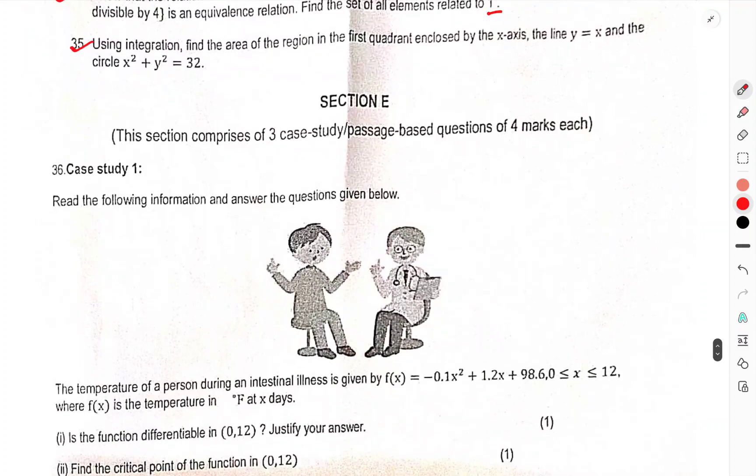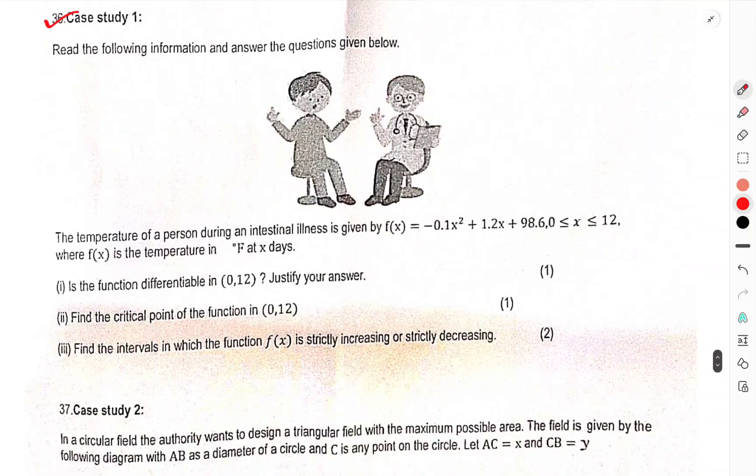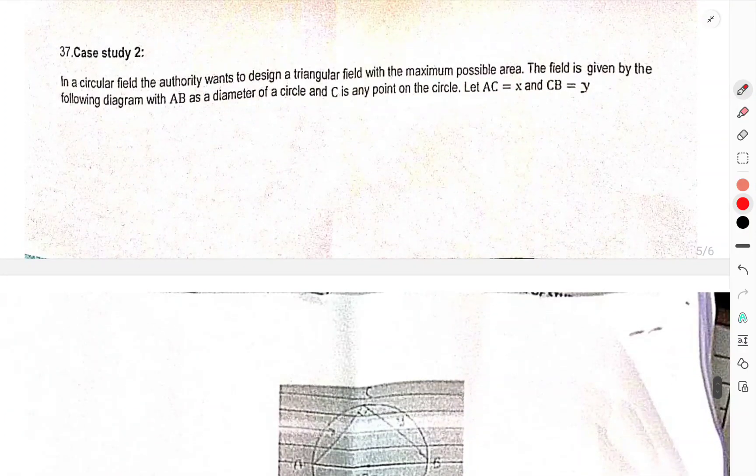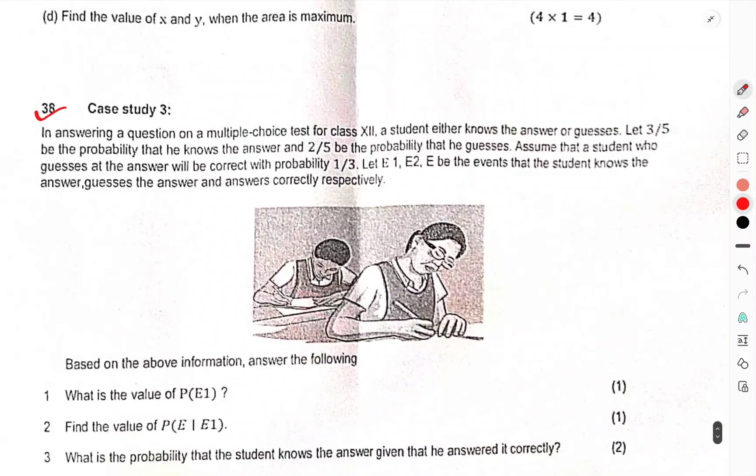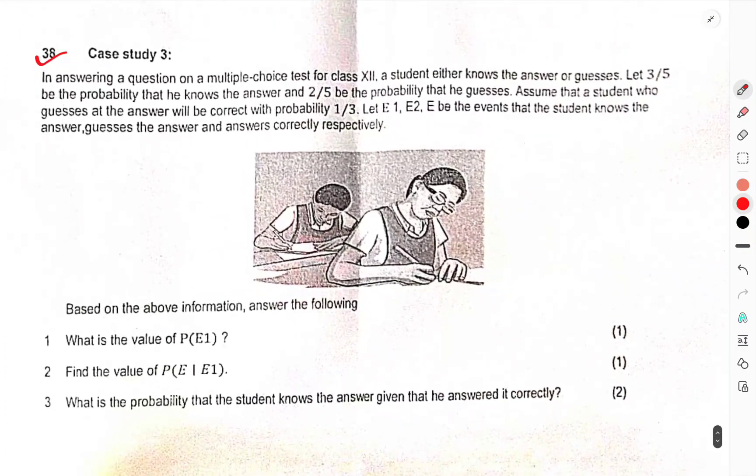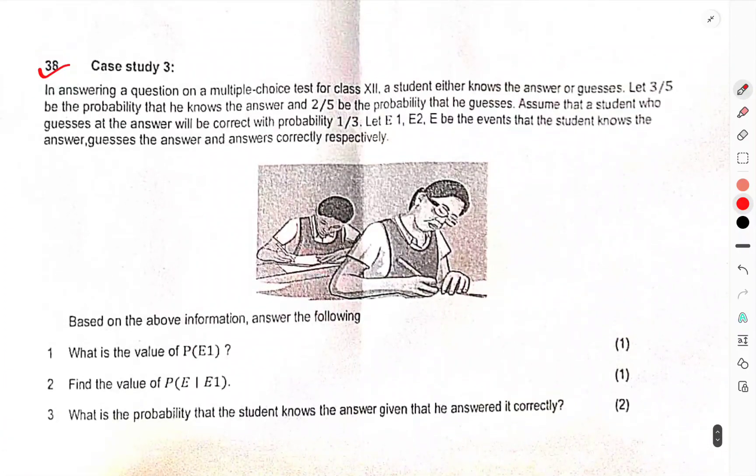Section E is case study based question. I am not reading this section. You have to read this yourself. Question number 36 is a case study 1. I will have to go through with this question. Now we have come to the question number 37, case study 2. This is also you have to go through this question. Now we have come to the question number 38. Case study question number 3. Yes. This was the case 3 of question 38.